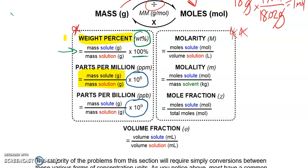Weight percent, parts per million, parts per billion, and volume fraction all deal purely with mass or volumes. The three on the right that we'll now talk about are based on moles. The most common one, which you're probably at least a little familiar with from general chemistry, is molarity — probably the most common concentration unit we'll almost always use.